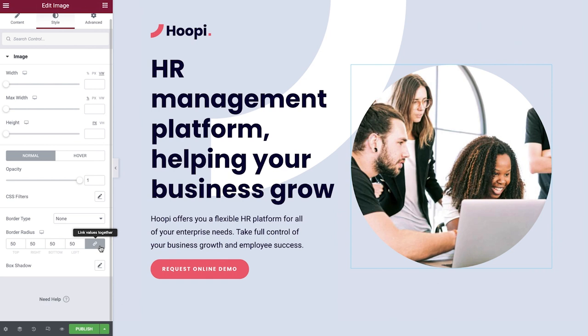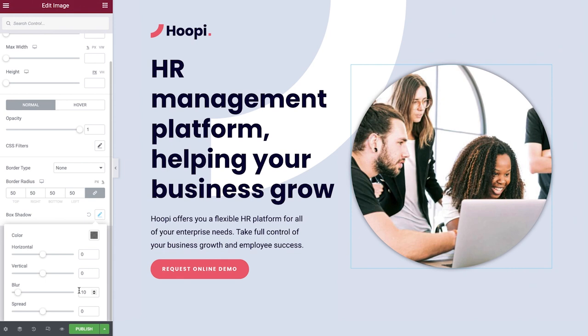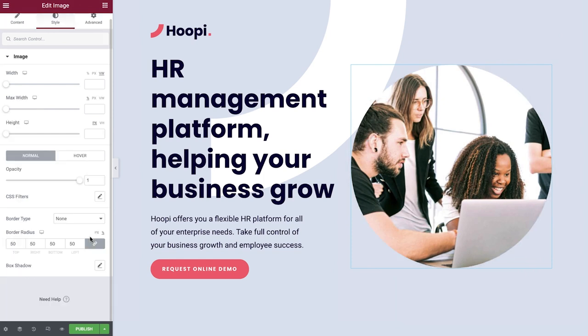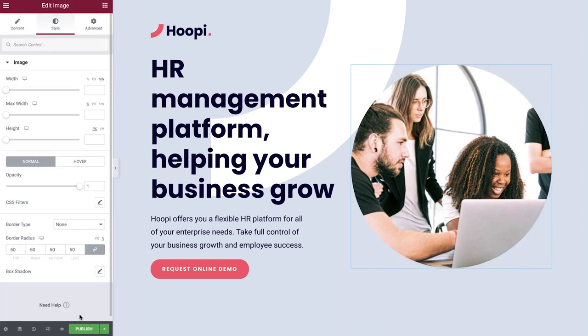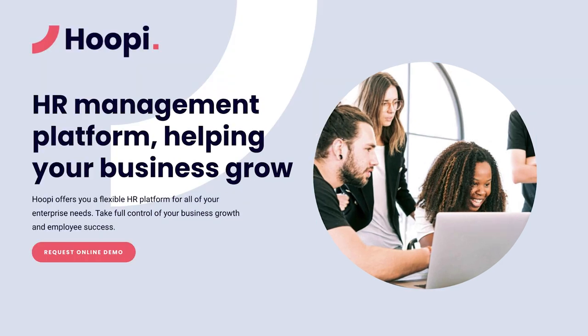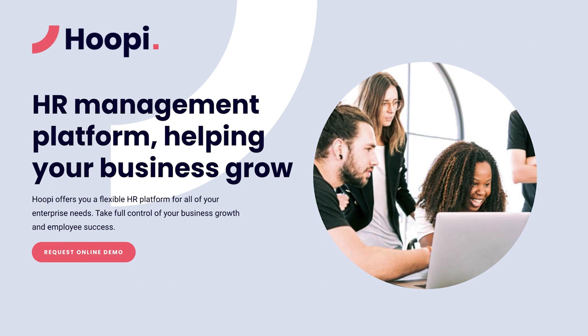We can add a box shadow to our image from here. You can play with the settings to give the image a subtle 3D effect. We'll leave this one as is for our design. Click Publish, and let's preview our design. Perfect! And there you have it — now you know how to use the image widget to draw your visitor's attention and increase engagement on your website.